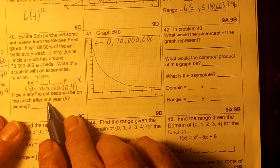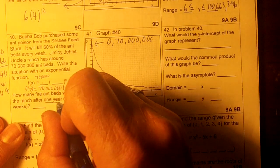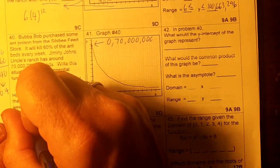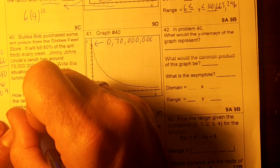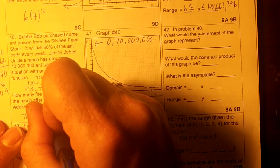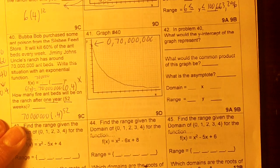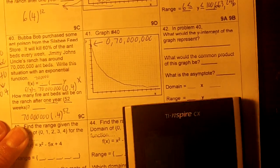How many will be at the end of one year, which is 52 weeks, right? So this is going to be 70 million, parentheses, 0.4 to the 52nd, right? Okay, so let's graph this.